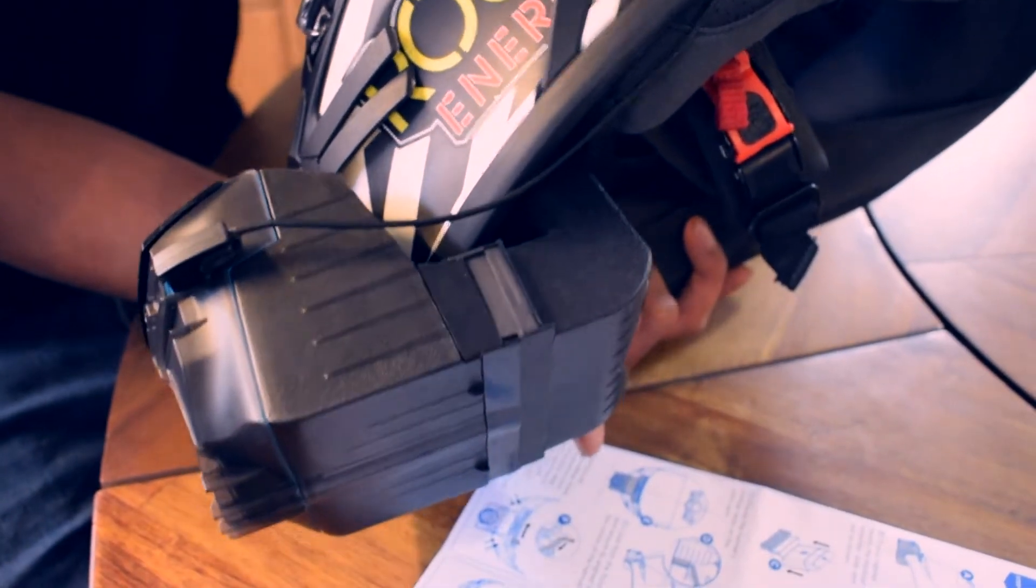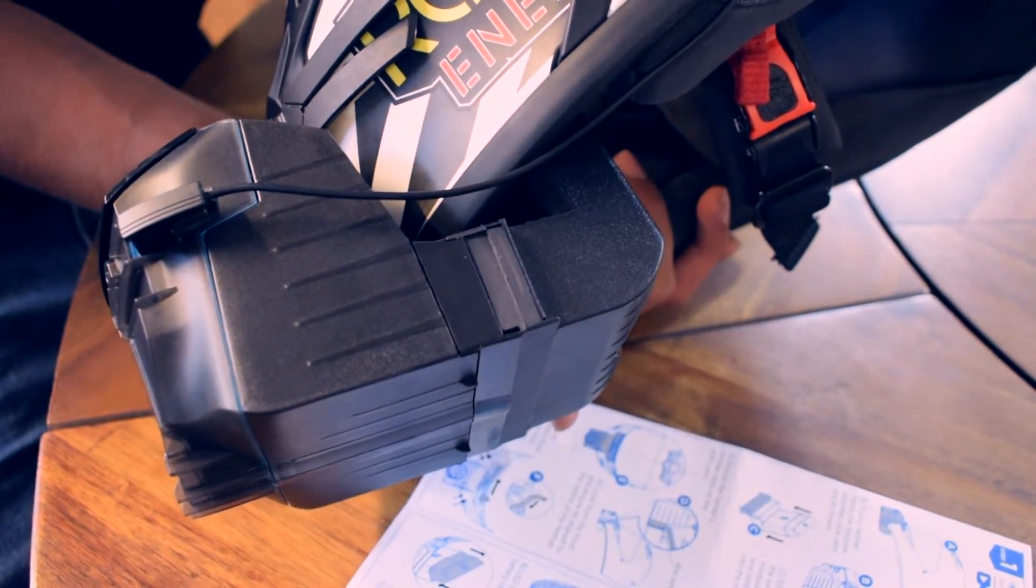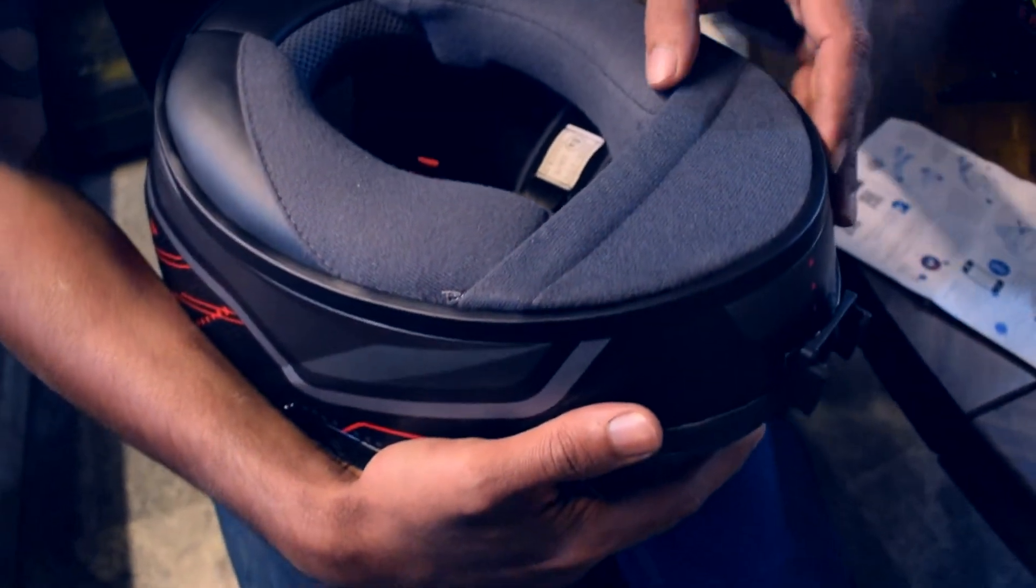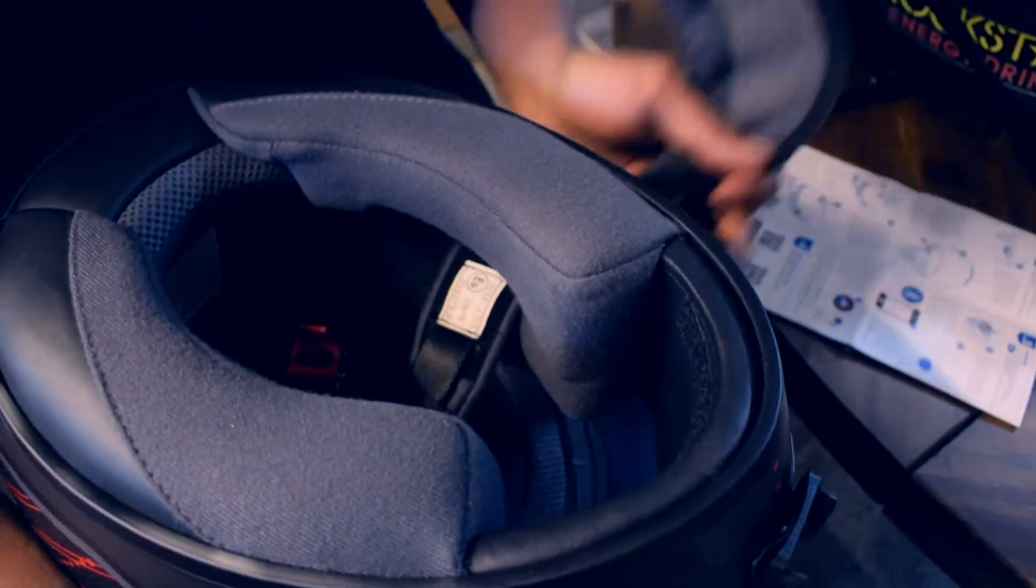As you can see, on this Arai helmet the extender was required, unlike the Bell helmet where the device fit freely. If your helmet comes with a chin curtain, make sure you remove it prior to installation of your Blue Armor device.